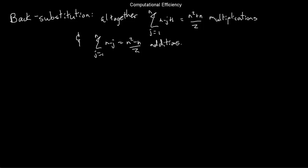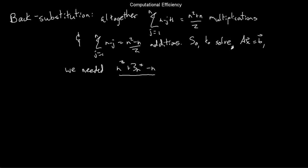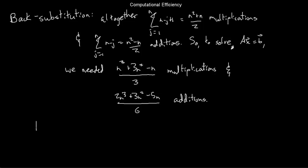So if you are solving Ax=b, adding up row reduction and back substitution multiplications gives n³+3n²−n over 3 multiplications, and 2n³+3n²−5n over 6 additions. For the rest of the video, we'll compare this with the number of operations it takes to use the inverse — multiplying both sides by A⁻¹. It's going to turn out that the inverse is less efficient than just doing row reduction and back substitution.